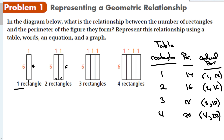Looking at this data, I recognize a pattern: for each rectangle added, the perimeter goes up by 2. That makes sense because when you add another rectangle, the shared side no longer counts as outside, so you gain one unit on the top and one on the bottom. In words: multiply the number of rectangles by 2 to get the total length of the top and bottom sides, then add 2 times 6, which is 12, for the other sides. So for 3 rectangles: 3 times 2 is 6, plus 12 equals 18.